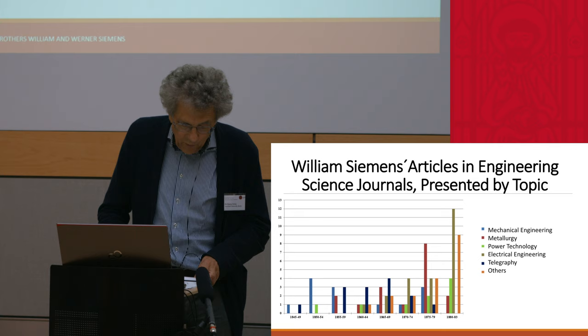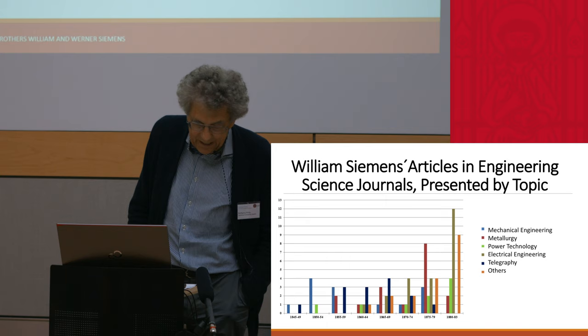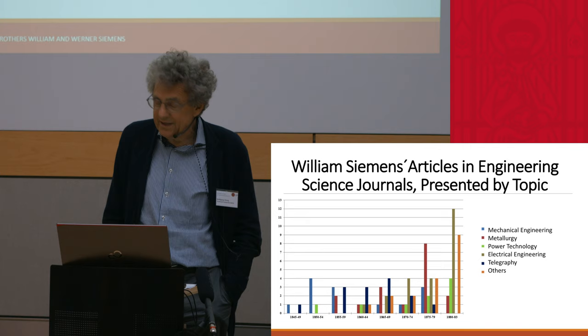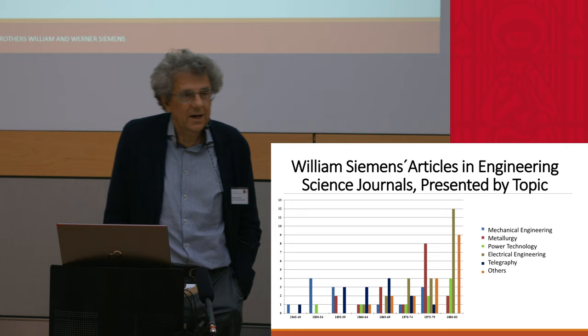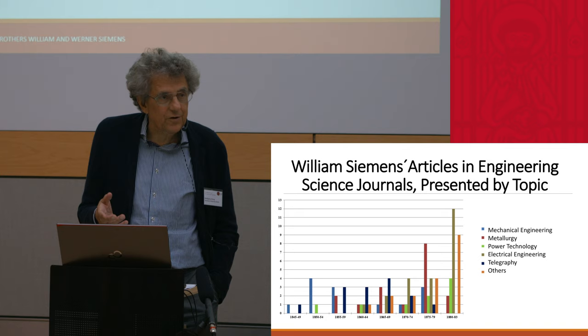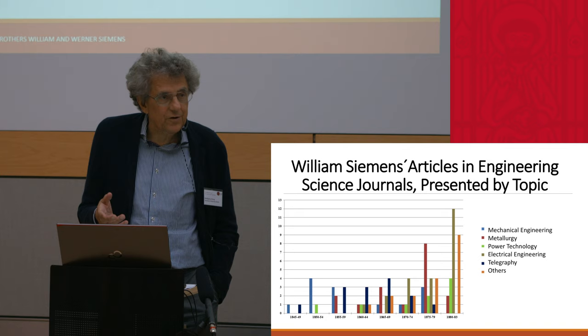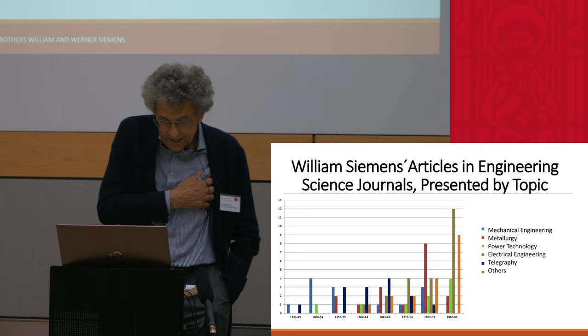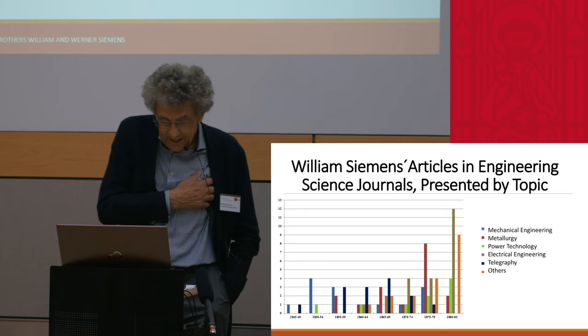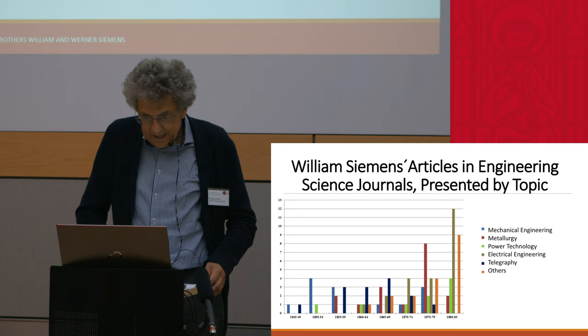William Siemens was very active in the scholarly work of the institutions. He participated in discussions and published many articles in very different fields. He not only published in electrical engineering and telegraphy, which was the Siemens business, but especially in the beginning in mechanical engineering — he was a mechanical engineer, not an electrical engineer; electrical engineering didn't exist at the time. Later he published in metallurgy, particularly dealing with steel making.